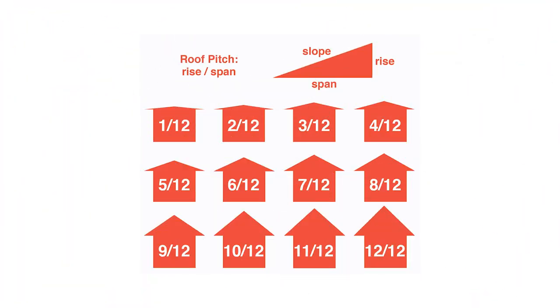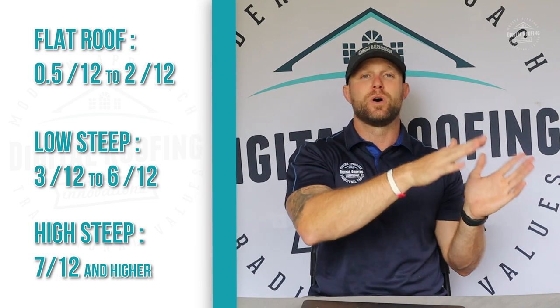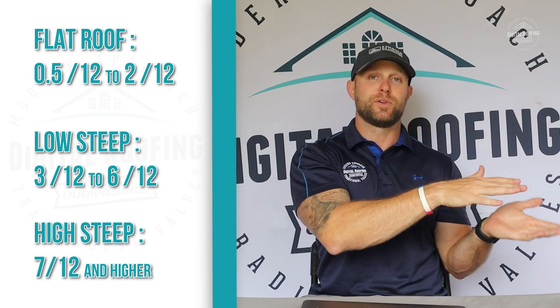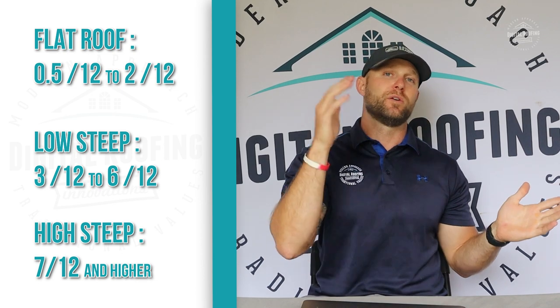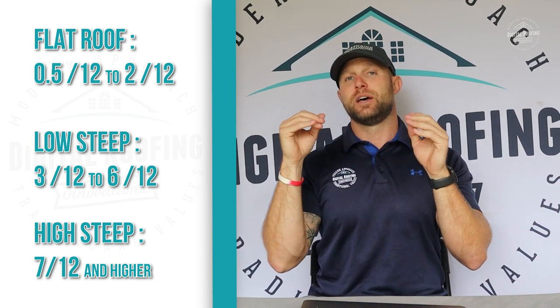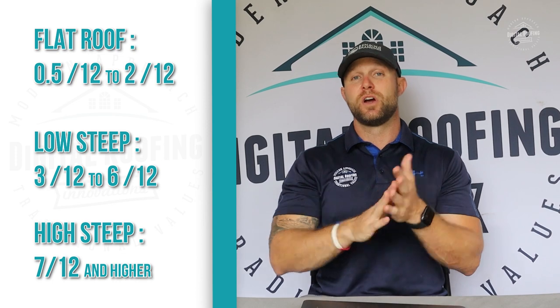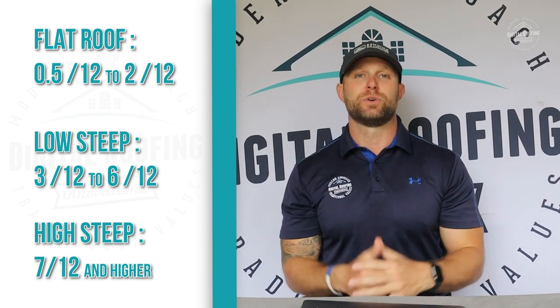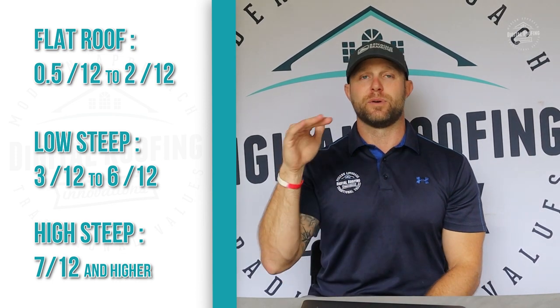Those are the three types of basic systems. You can break it into two groups — low pitch and high pitch — but I like to break it into three. So: 0.5 over 12 to 2 over 12 for your flat roofing, 3 over 12 to 6 over 12 for walkable sections, and anything 7 over 12 and above for high steep pitch roofs. That's really how I want you to classify the different pitches.